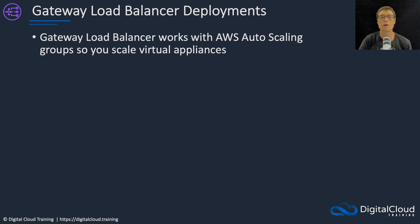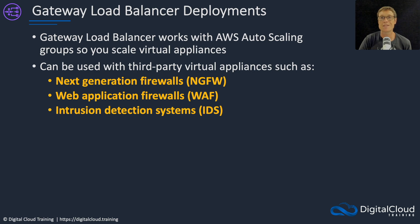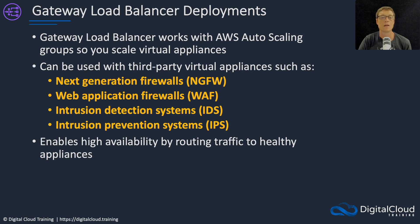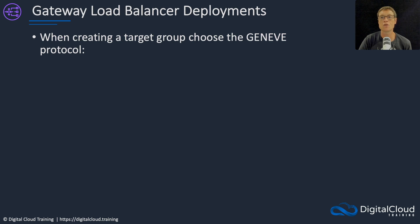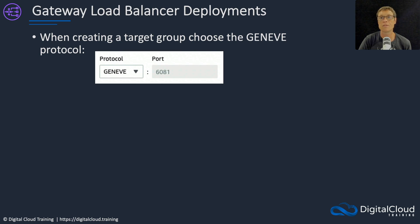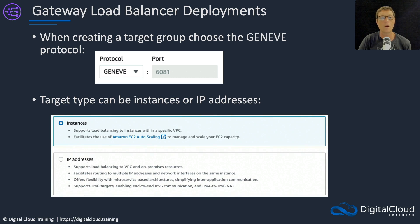A gateway load balancer works with AWS auto scaling, so you can have an auto scaling group of your firewalls, IDS systems, or IPS systems. It's often used with third-party virtual appliances, including next generation firewalls, web application firewalls, intrusion detection systems, and intrusion prevention systems. It enables high availability by routing traffic to healthy appliances. The gateway load balancer endpoints are powered by PrivateLink, so you can think of them as VPC endpoints. When creating a target group, you need to choose the GENEVE protocol, which uses port 6081. The target type can be instances or IP addresses.